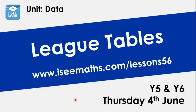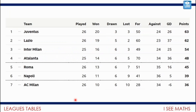Today is all about league tables. I love my football, and league tables are brilliant ways of showing results, so we're really going to dig into how they're built and problem-solve around them. We're going to start with the current league standings of the Italian Serie A. The way league tables are put together: we have the number of games teams have played, the number of wins, draws and losses, and 'for' is the number of goals the team have scored, while 'against' is the number of goals they've conceded.